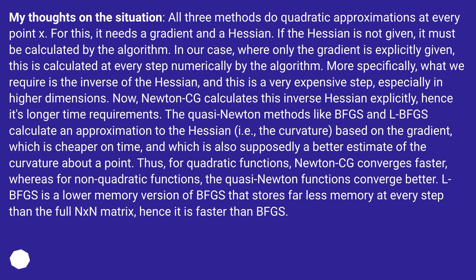Newton-CG calculates this inverse Hessian explicitly, hence its longer time requirements. The quasi-Newton methods like BFGS and LBFGS calculate an approximation to the Hessian, i.e. the curvature, based on the gradient, which is cheaper on time and supposedly a better estimate of the curvature at other points. Thus, for quadratic functions, Newton-CG converges faster, whereas for non-quadratic functions, the quasi-Newton methods converge better.